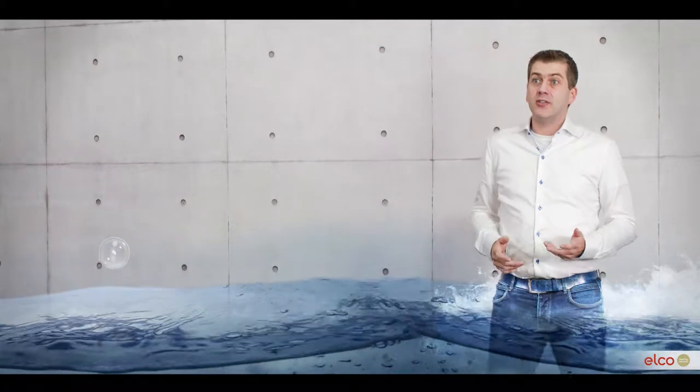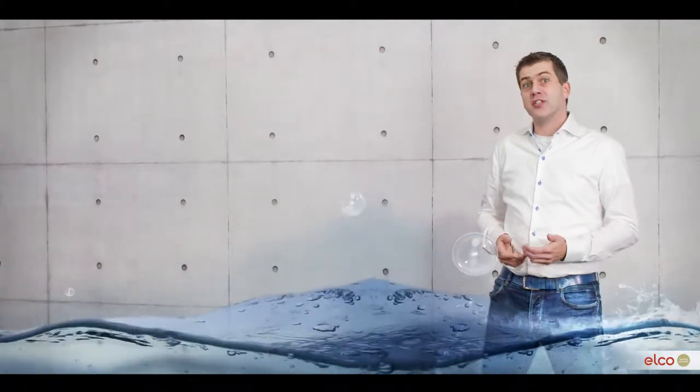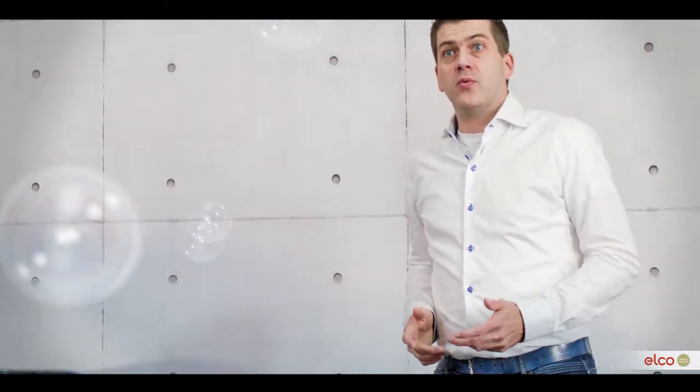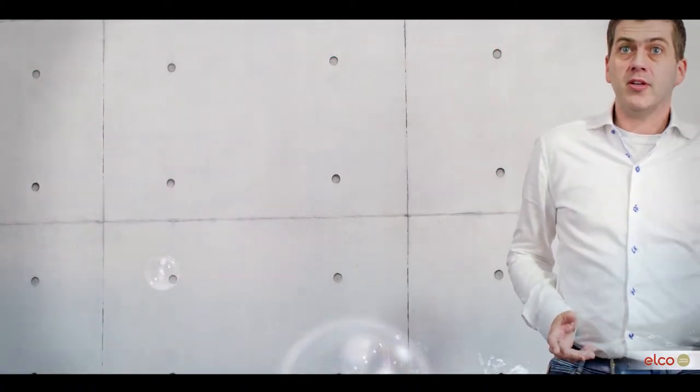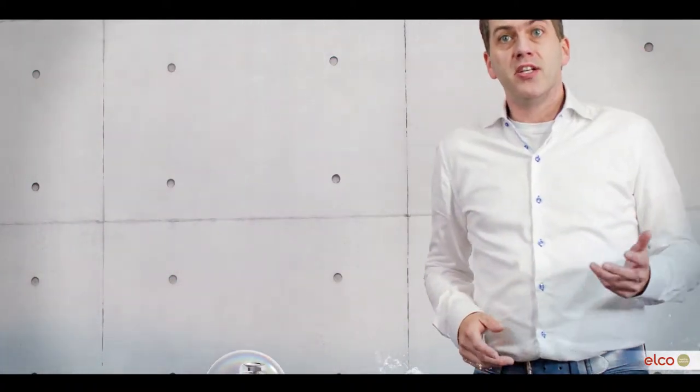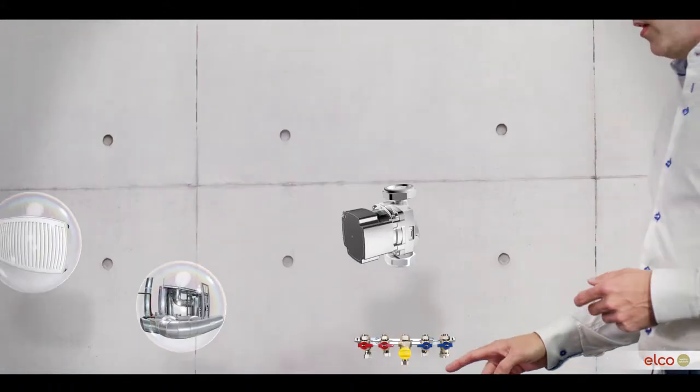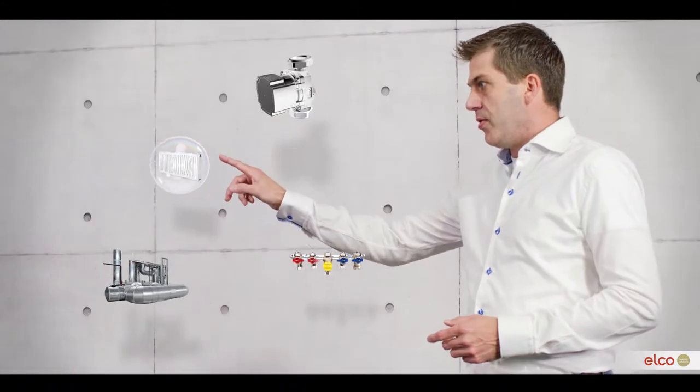However, corrosion on the water side is not the most important factor for choosing the heat exchanger's material, as the minimum required water quality is also affected by other materials used in the heating system, such as pumps, valves, pipes and radiators.